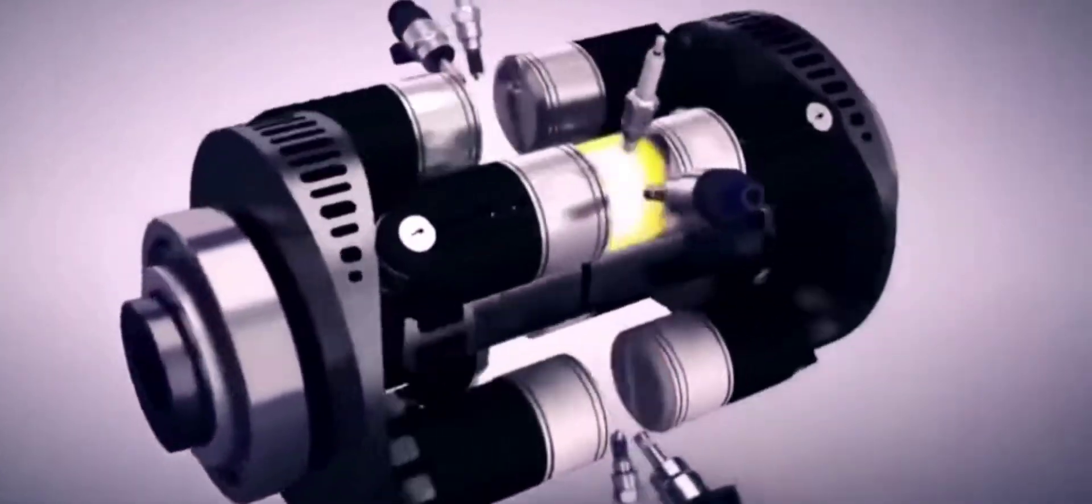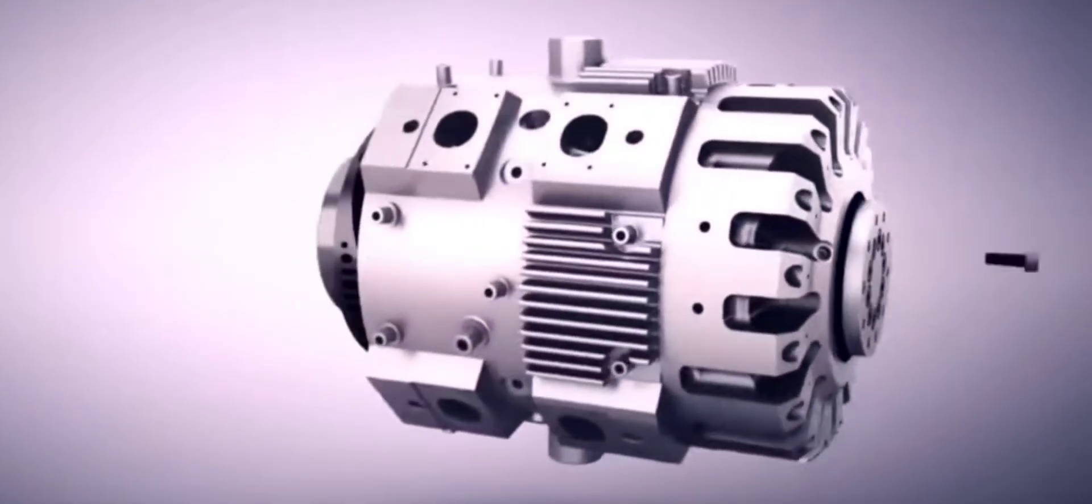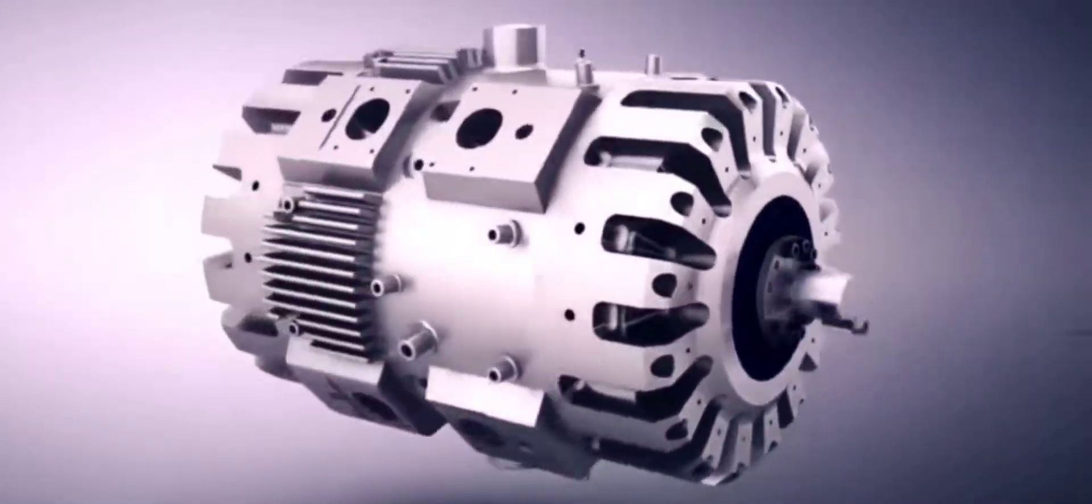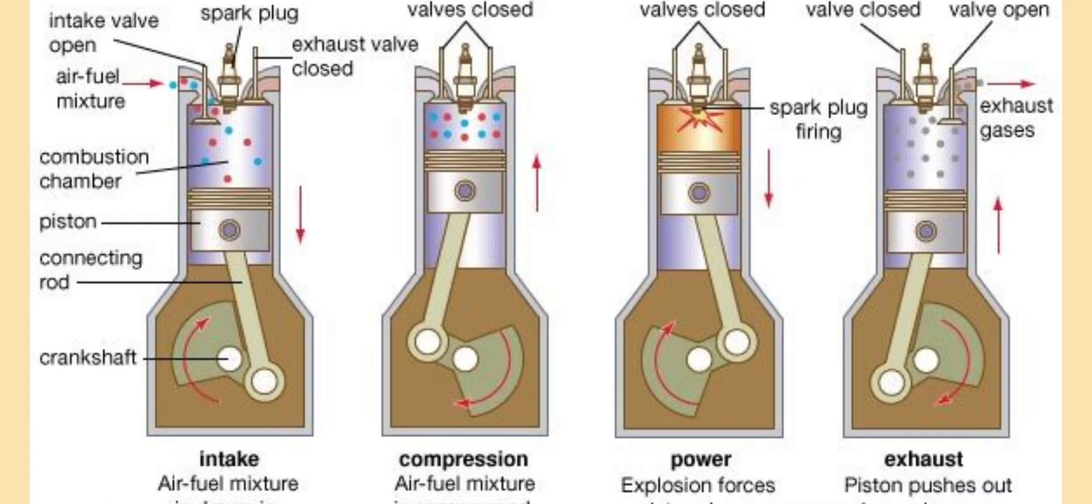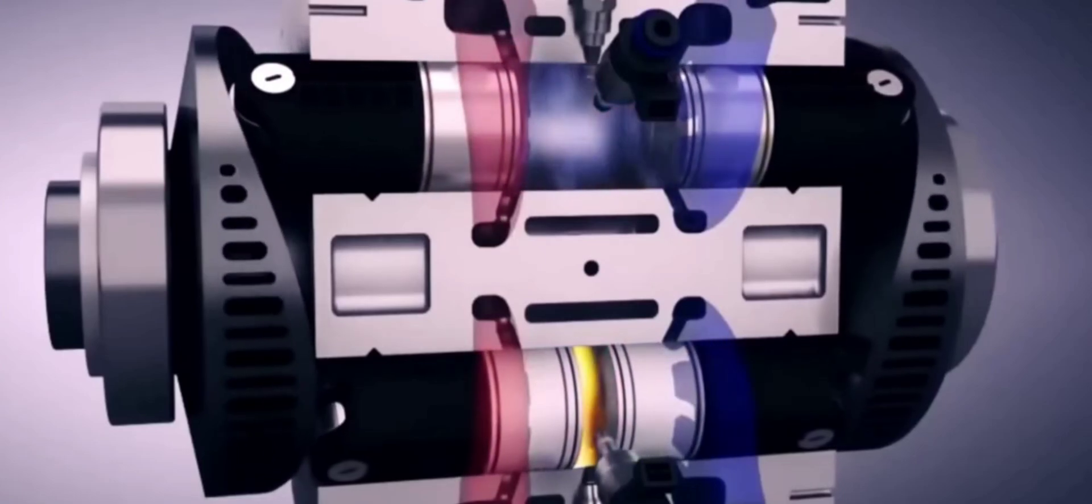So what exactly is a one stroke engine? Think of it as an engine that does everything in one go. Unlike a four stroke engine which has separate steps for intake, compression, power and exhaust, a one stroke engine combines it all into one movement of the piston.